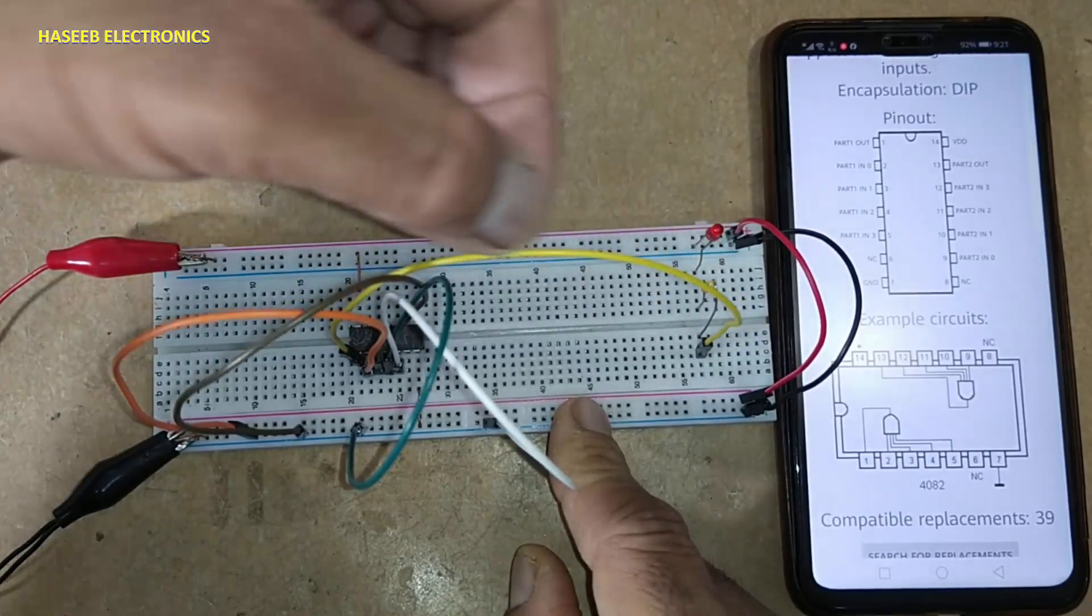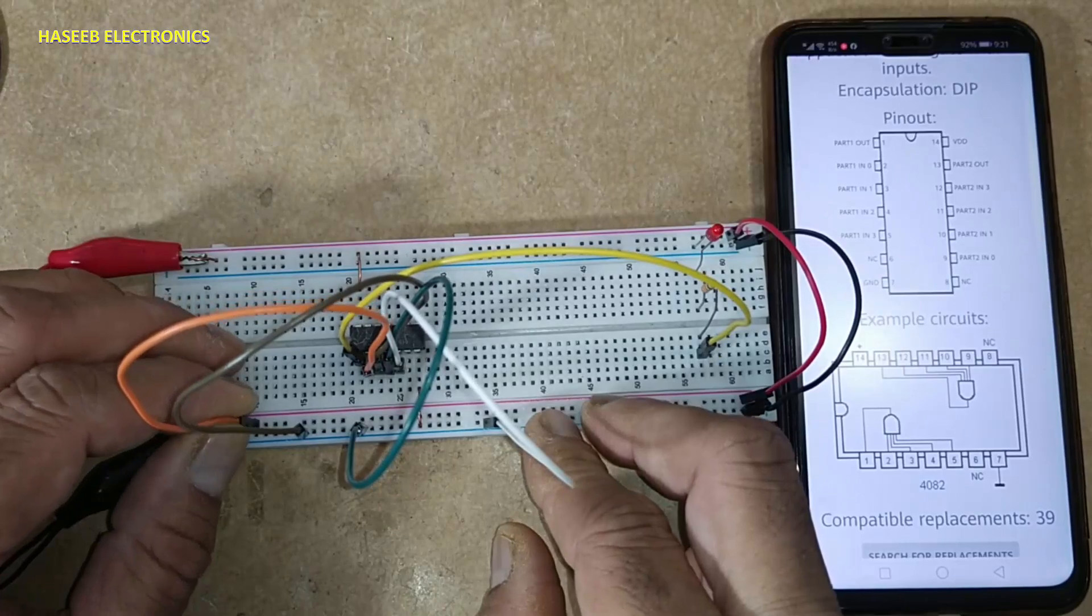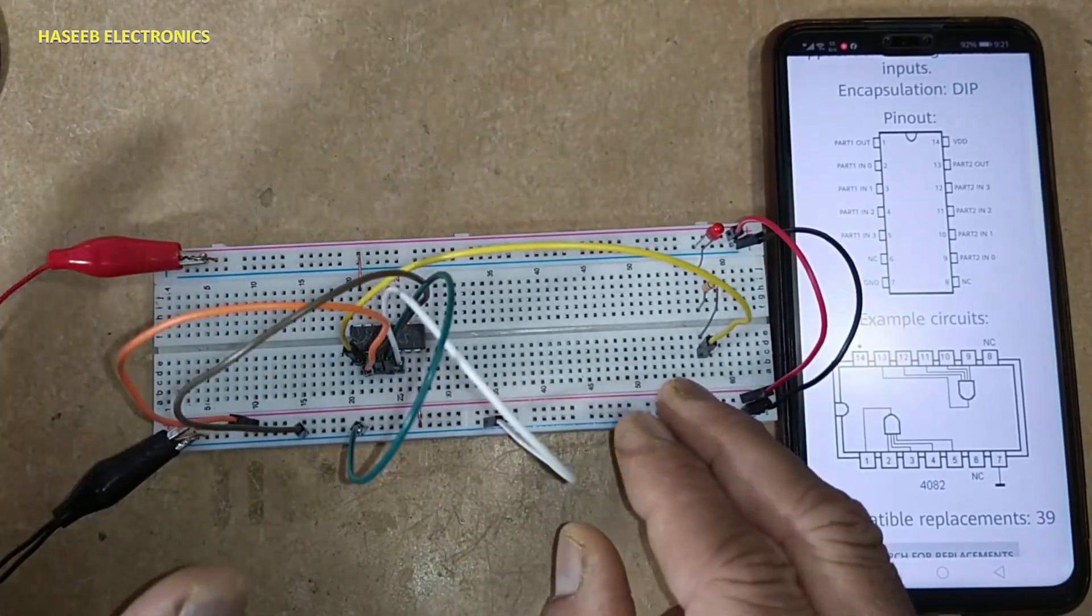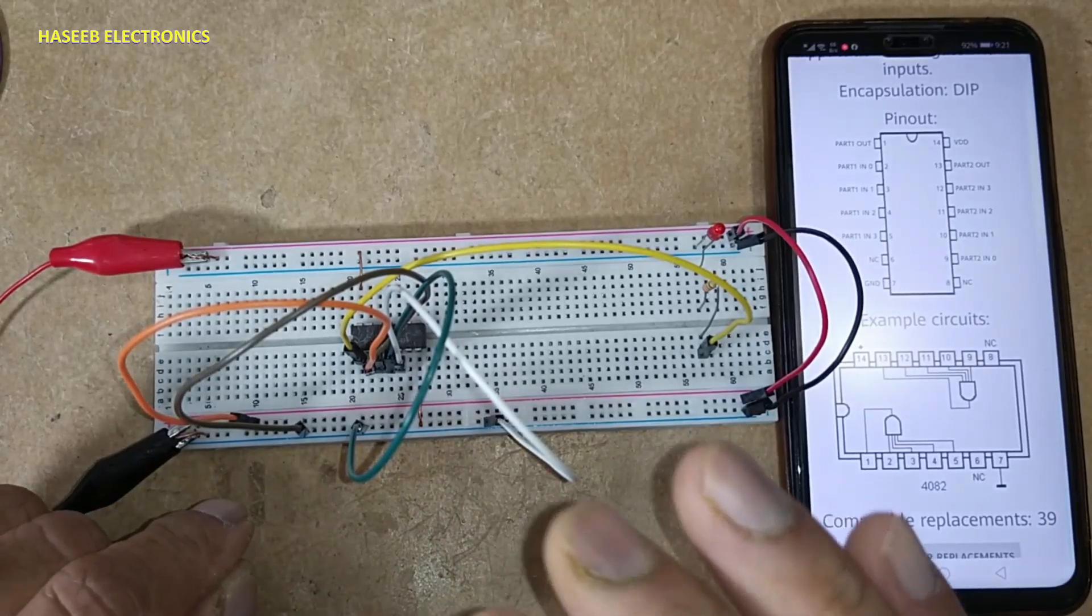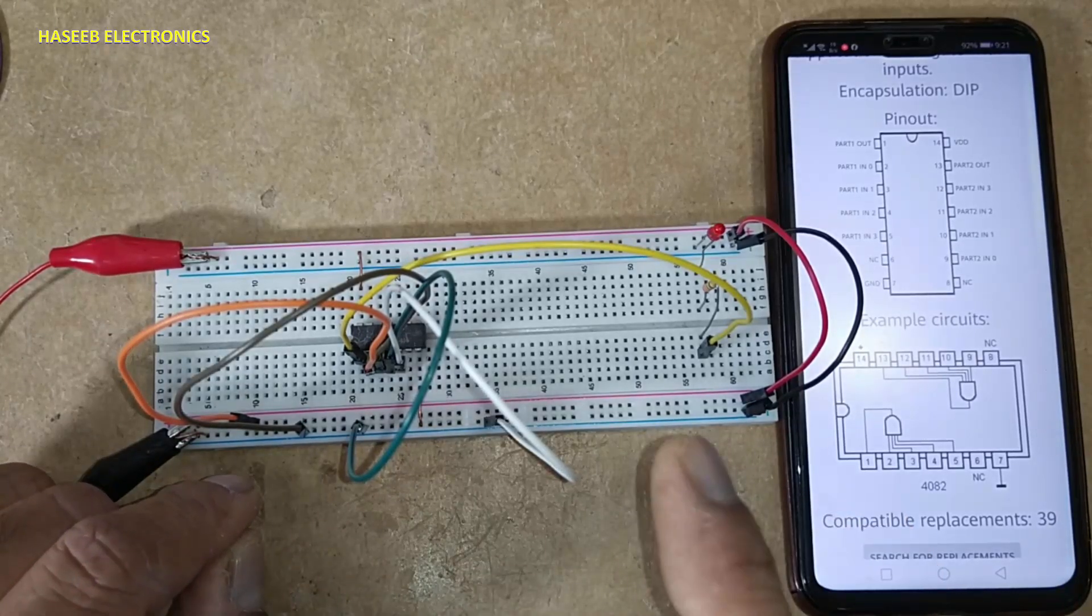In AND gate, when any input is low or all inputs are low, the output will be low.